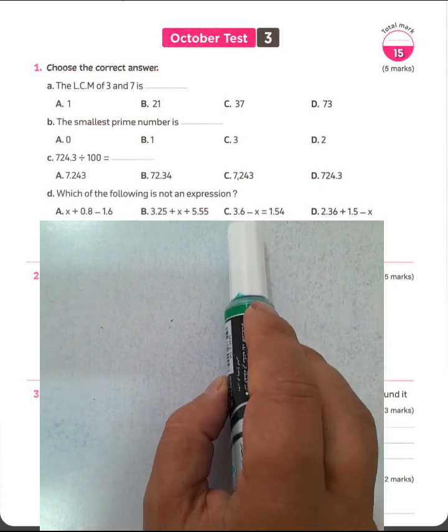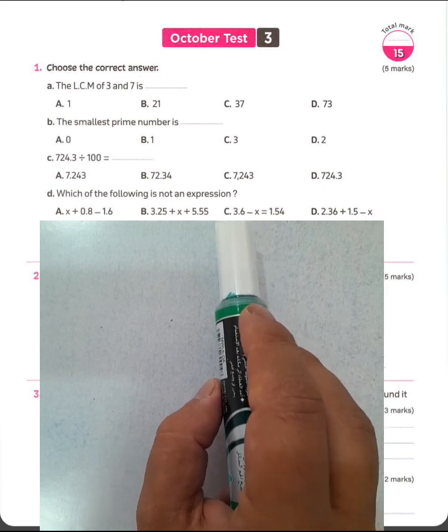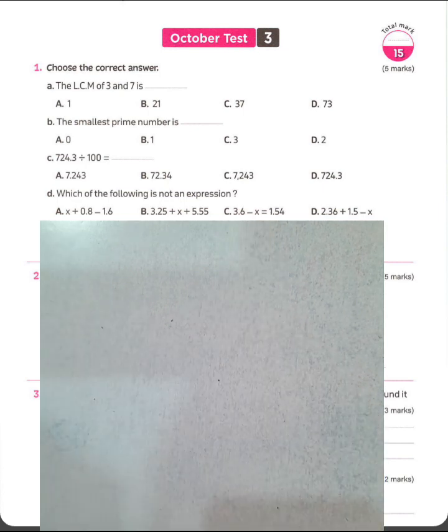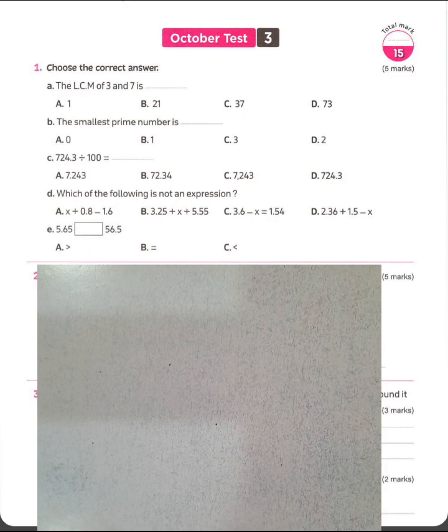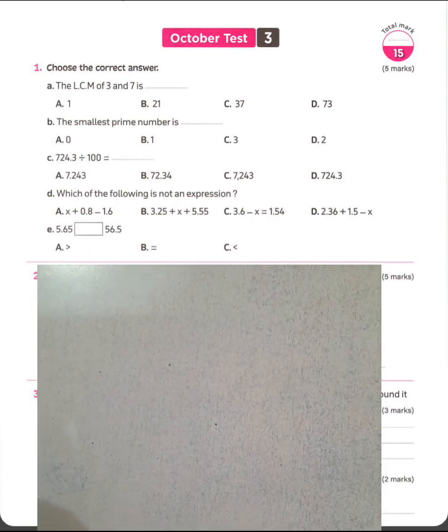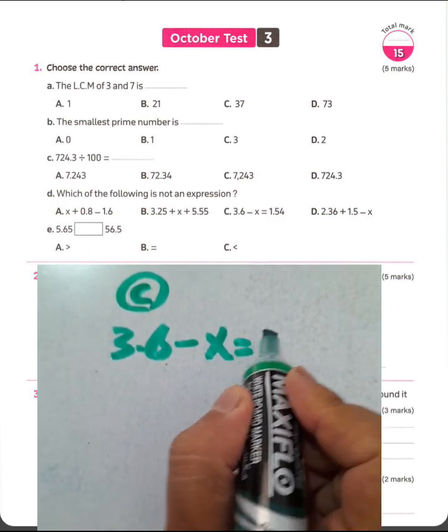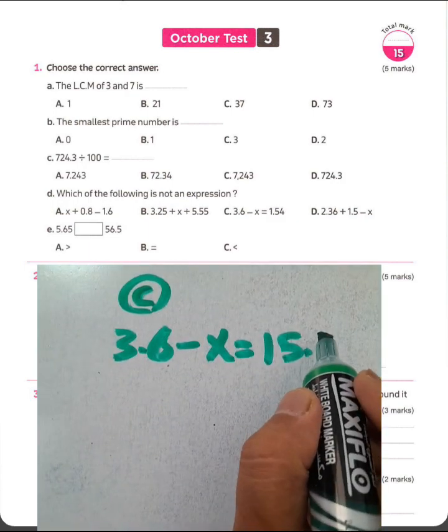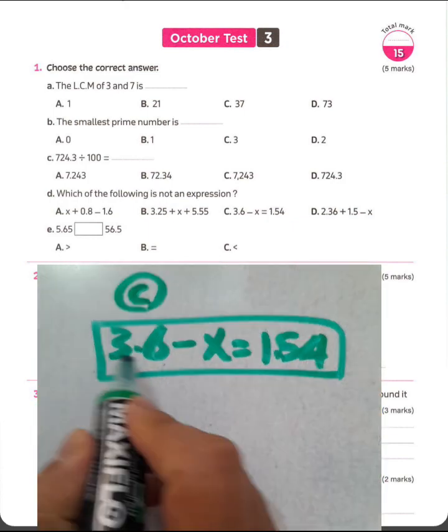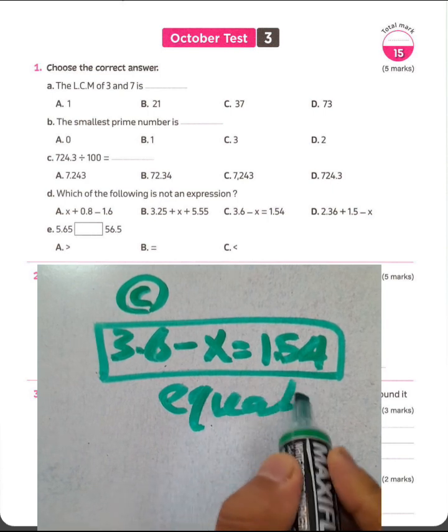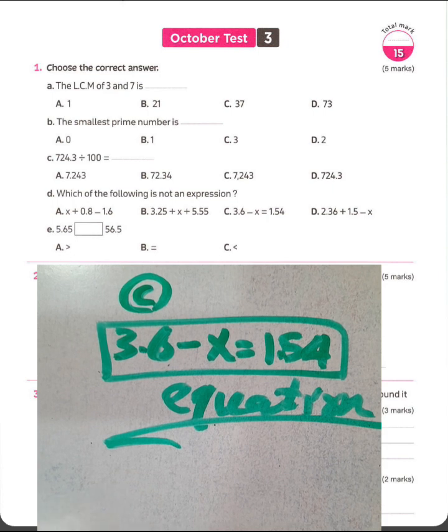So you must choose letter C. Choose letter C because you want to find not expression. Not expression, okay, it's not expression. Not expression. It will be letter C because letter C, we call it equation. In letter C, it gives us 3.6 minus x equals 1.54. It's equation. We call it what? Equation. Okay, you must choose letter C.